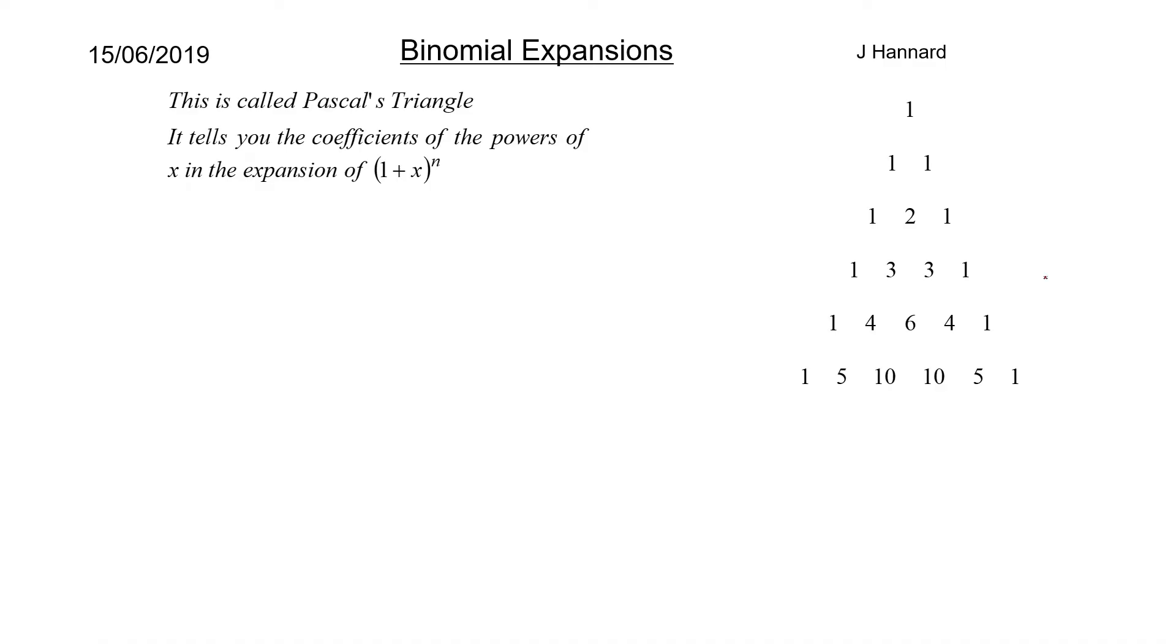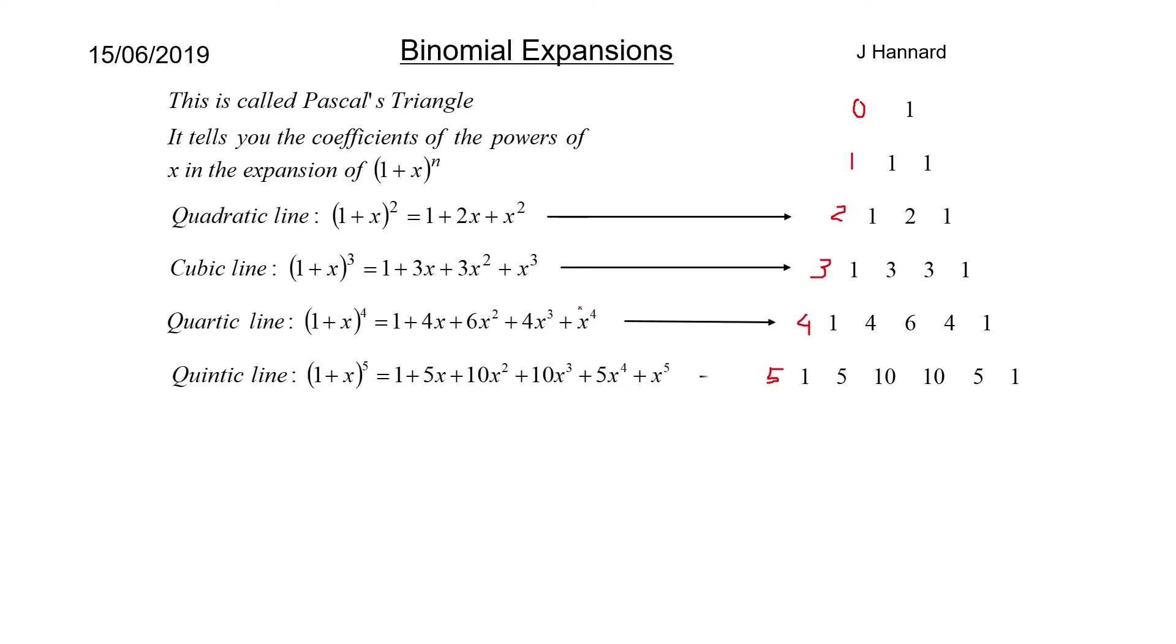So it's a predictable format that tells you the coefficients of the powers of x in the expansion 1 plus x to the n. You've got the zeroth order, the first, the second, the third - this is what n is equal to. You've got 4, you've got 5 here. Basically, this number tells you what row you've got. So if it was 1 plus x to the 5, I know it's 1 plus 5x plus 10x squared plus 10x cubed plus 5x to the 4 plus x to the 5. A really easy method.